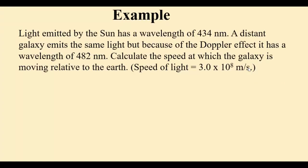For example, light emitted by the sun has a wavelength of 434 nanometers. A distant galaxy emits the same light, but because of the Doppler effect, it has a wavelength of 482 nanometers. Calculate the speed at which the galaxy is moving relative to the Earth, taking the speed of light to be 3.0 × 10^8 meters per second.